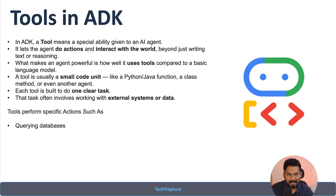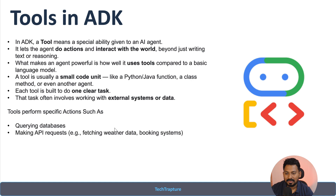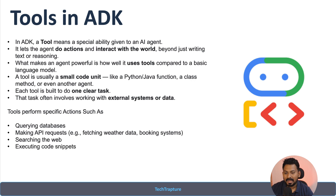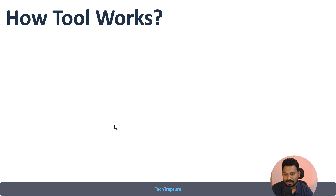Using tools we can perform various operations. For example, querying a database in BigQuery — we will see a demo of how to query data just with a few prompts using an agent. We can also make API requests, which we will see with the GitHub example, search the web using Google Search or a Wikipedia tool, and execute code snippets by writing our own Python functions.